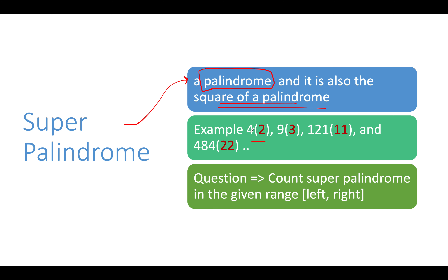What are examples of such super palindromes? Four is an example because four is itself a palindromic number, and two — which is its square root — is also palindromic. Similarly, nine is palindromic and its square root three is also palindromic. 121 is super palindromic because it is itself a palindrome and its square root 11 is also a palindrome. Likewise, 484 is palindromic and its square root 22 is also palindromic.